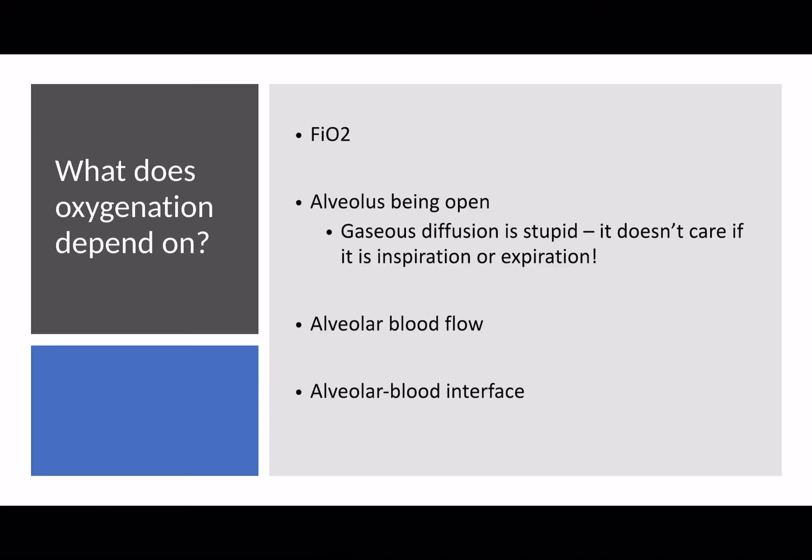When thinking about oxygenation of the blood, there are only really four things that can affect it — which is great from our perspective, because it means there are only four things we can try to manipulate in order to improve oxygenation. The first and most simple is the fractional inspired concentration of oxygen, FiO2. By dialing up the amount of oxygen, you improve the amount of oxygen in the alveolus, increasing the diffusion gradient between the alveolus and the blood and getting quicker diffusion of oxygen into the blood supply.